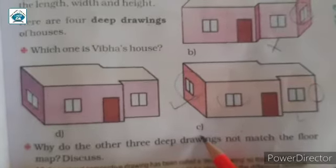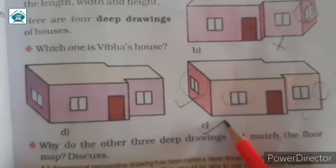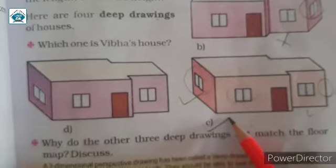Picture C is the correct 3D drawing of Vibha's house. Or you can say deep drawing of Vibha's house.